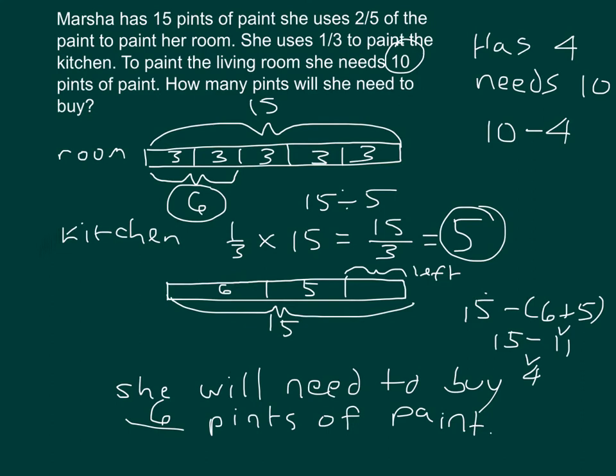Thinking about whether our answer is reasonable: if she buys six and she had four left, that gives her ten — which is exactly what she needed. Yes, this is reasonable.